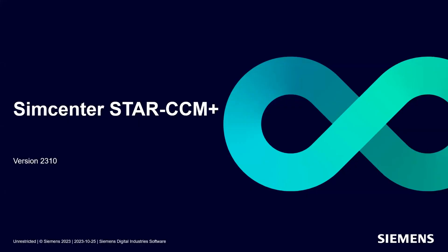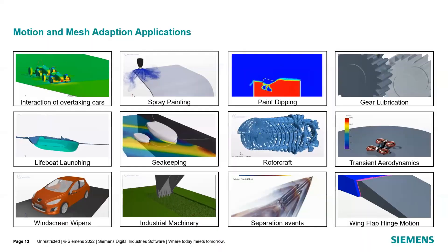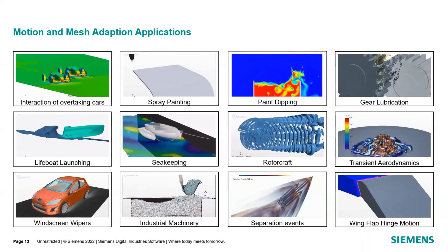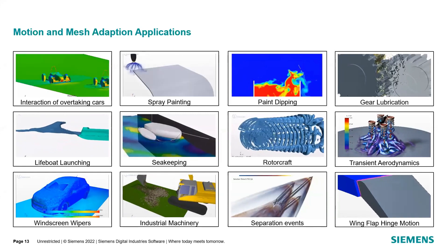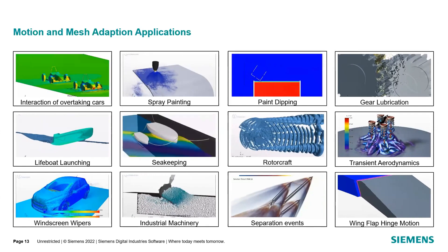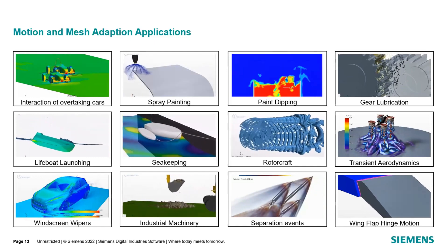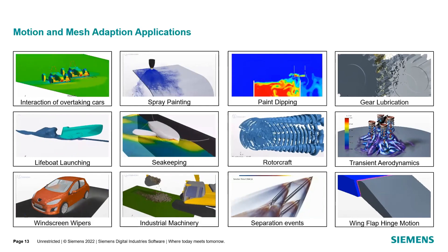StarCCM+ is very well suited for this application. Even though on the surface throwing a disc seems simple, when you dive in the dynamics are quite complex from a modeling perspective. The main analogy is to rotorcraft — it has a lot of similarities in methodology. StarCCM+ has very capable tools for modeling helicopter blades and fuselages, and those same techniques apply to a rotating, translating disc like a Frisbee.